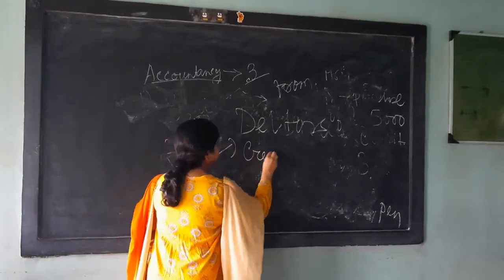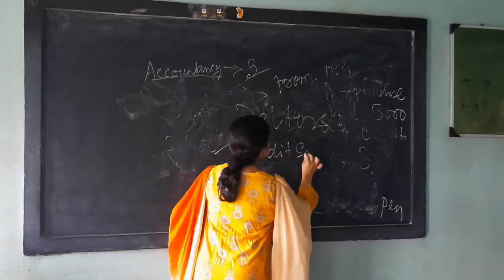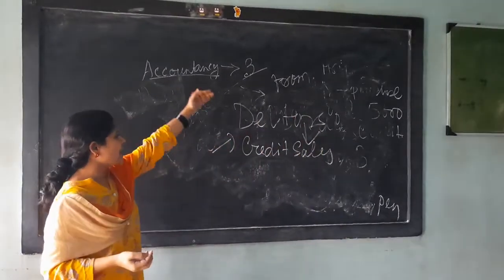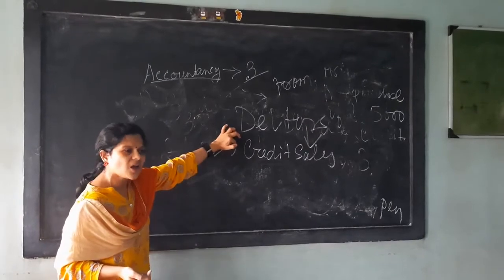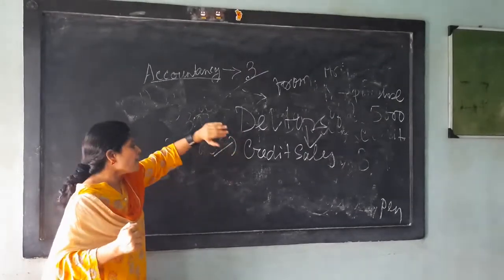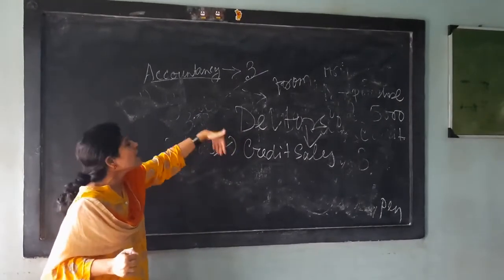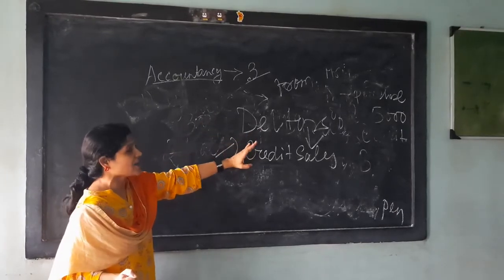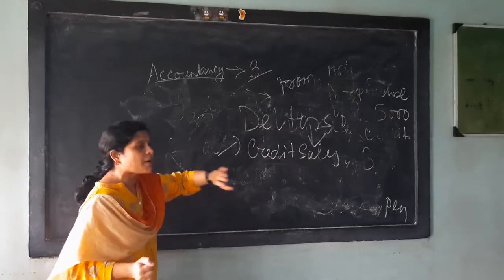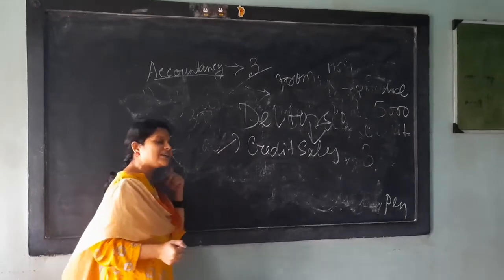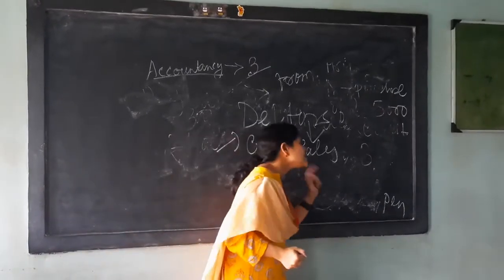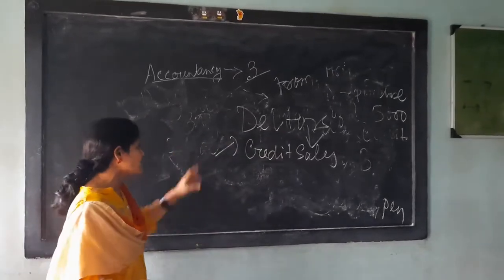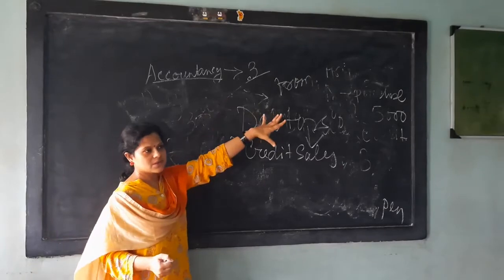The credit sales. When I am selling my goods to someone on credit, that person is not paying the cash or any amount of money. I am selling my goods to someone on credit, and then that person or that customer will be considered as the debtor of the business.